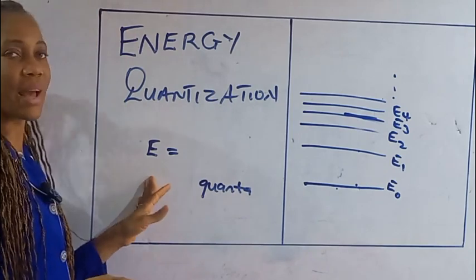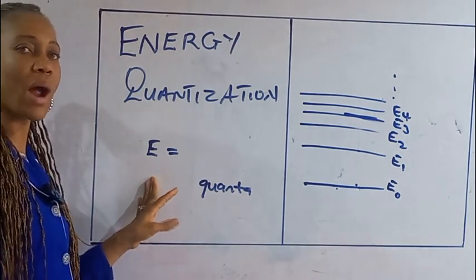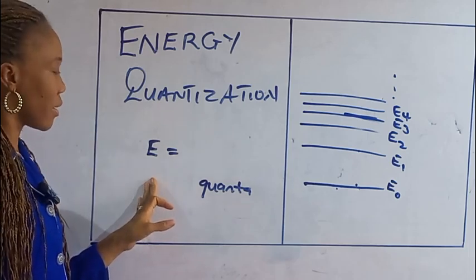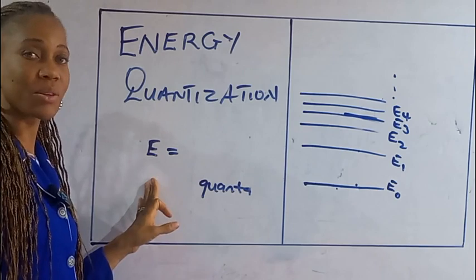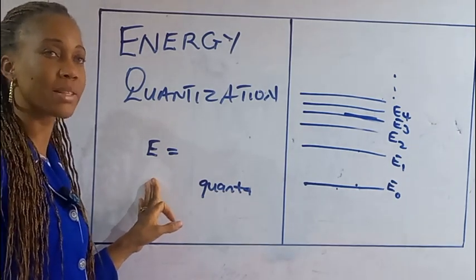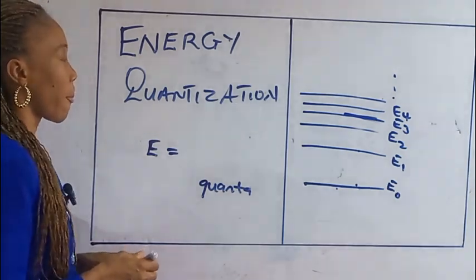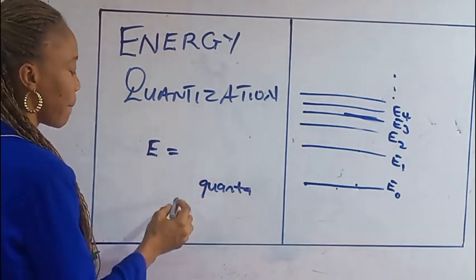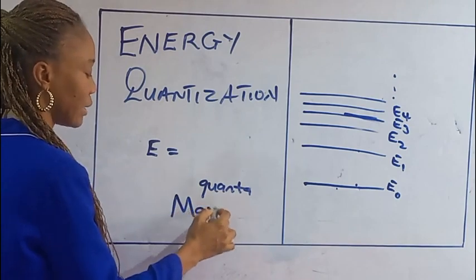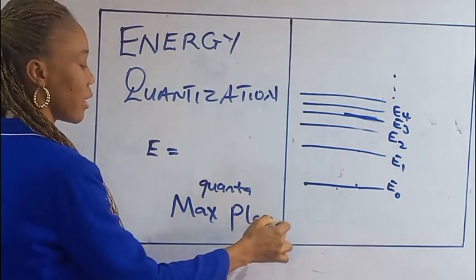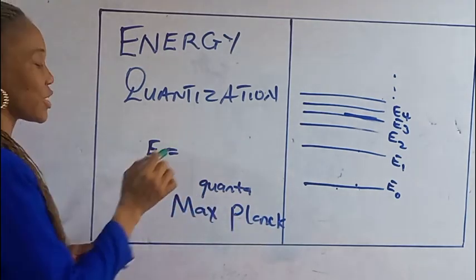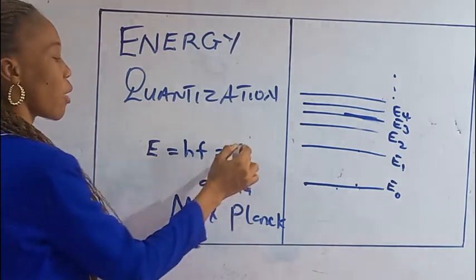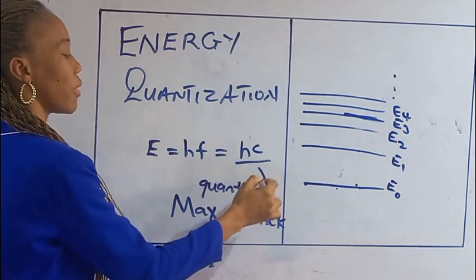This energy quantization, which describes how energy is emitted in discrete particles called quanta, was proposed by Max Planck. He came up with the formula that energy E is equal to hf, and is also equal to hc upon lambda.